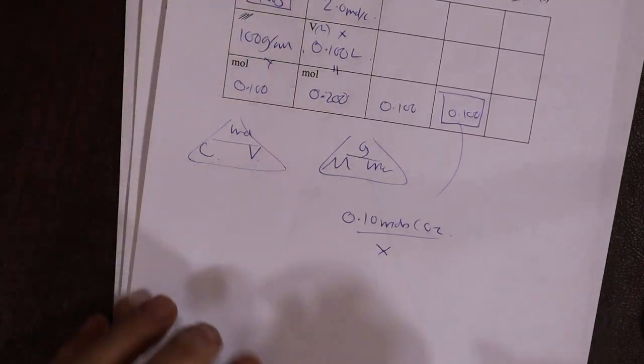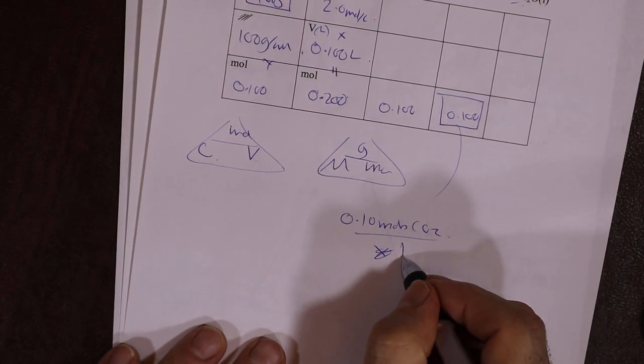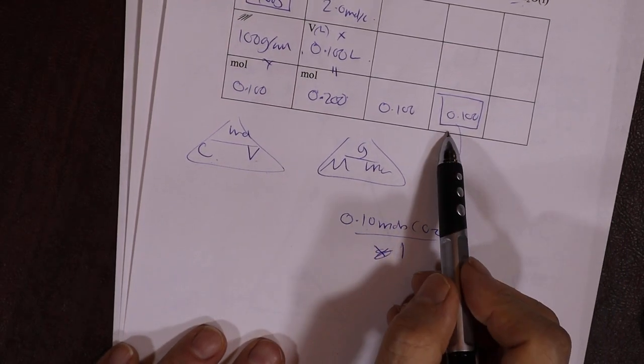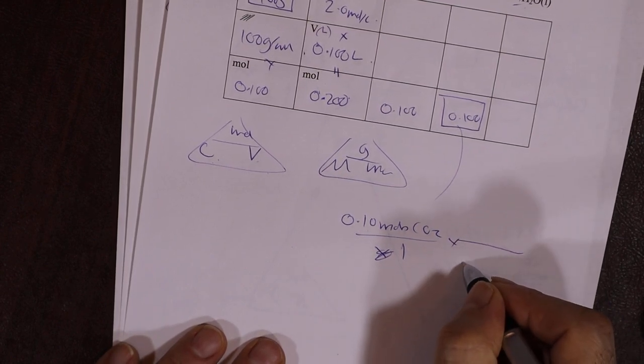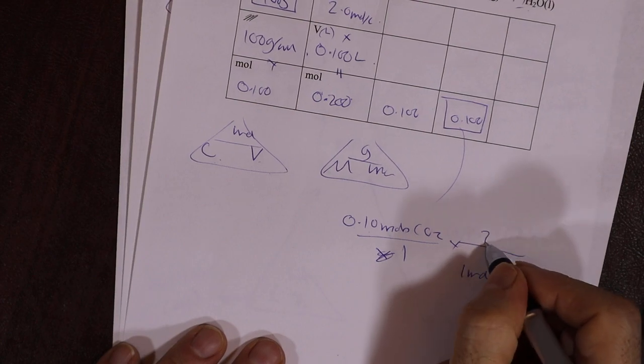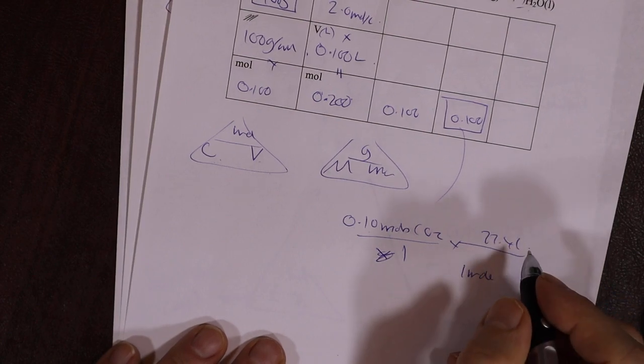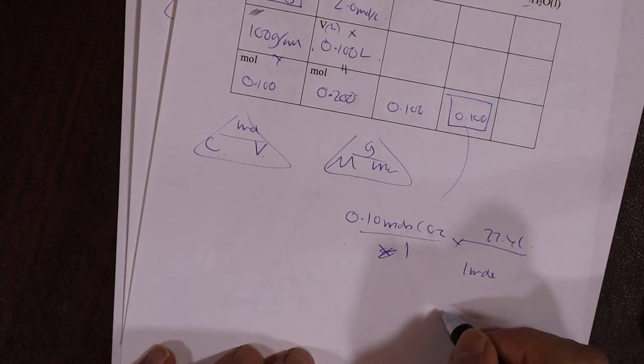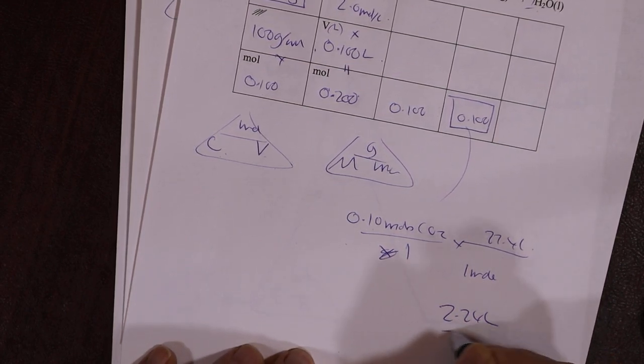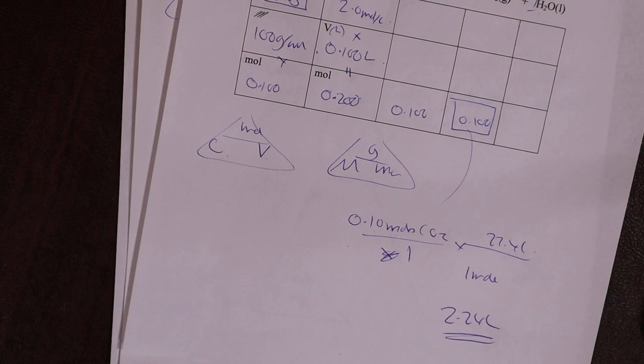I apologize. Keep doing that. 0.1 moles CO2 is what we'd make. Times 1 mole is 22.4 liters, which equals 0.1 times 22.4, 2.24 liters.